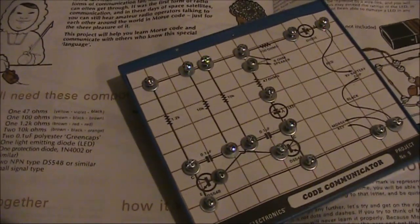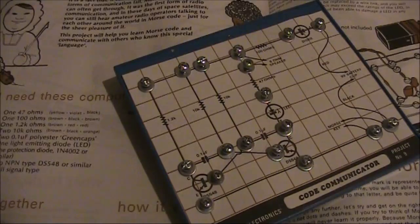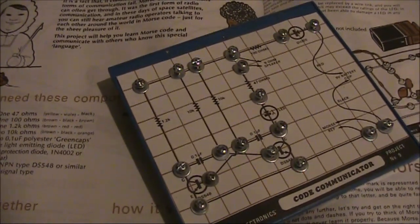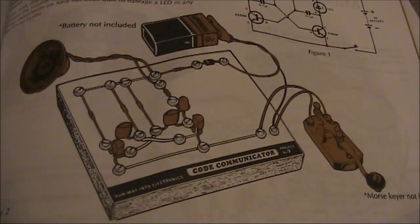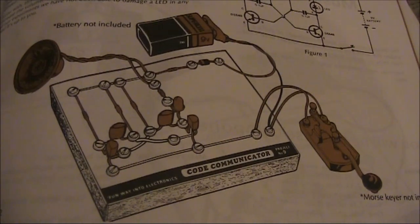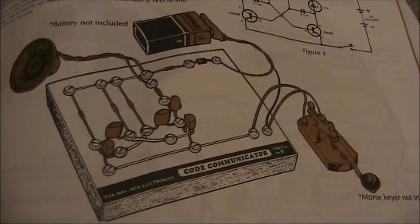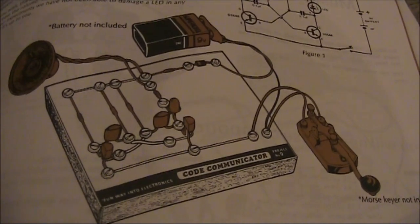It's two transistors in the now familiar multi-vibrator circuit, and it drives a speaker. It's pictured with a Morse key, but I'll just use two wires shorted together. It will still produce the same sound.